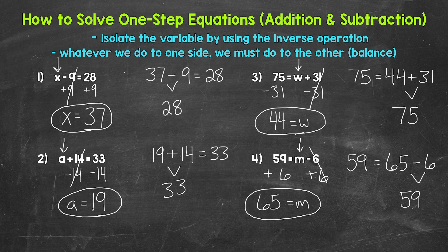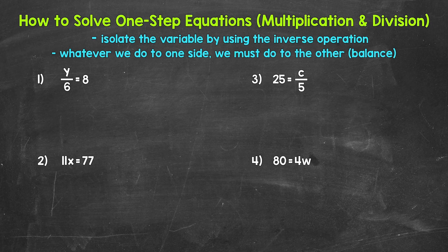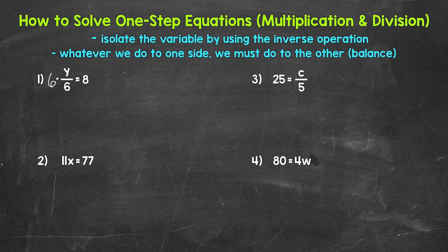So there's our addition and subtraction section. Let's move on to multiplication and division. Let's jump into number 1 where we have y divided by 6 equals 8. Remember, when we have something in fractional form like that, we divide. Now we are dividing y by 6, so we need to undo that division by using the inverse operation. What's the inverse or opposite of division? Well, multiplication. So let's multiply the left side of the equation by 6. Whatever we do to one side of the equation, we must do to the other side in order to keep everything balanced and equivalent. So let's multiply the right side by 6 as well. On the left side, we are dividing by 6 and multiplying by 6, so these 6s cancel each other out.